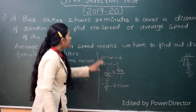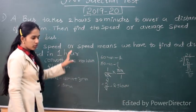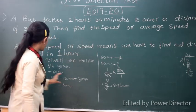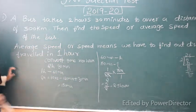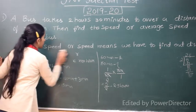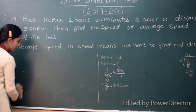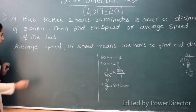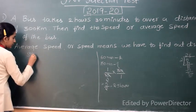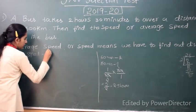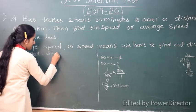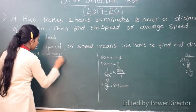So this is the total time taken to cover a distance of 300 km. So now we know the formula: speed is equal to distance by time.